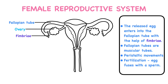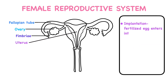In this journey, the egg may fuse with sperm in the fallopian tube — this process is called fertilization. If fertilization takes place, the fertilized egg enters into the uterus and implants in the wall of the uterus. This process is called implantation.